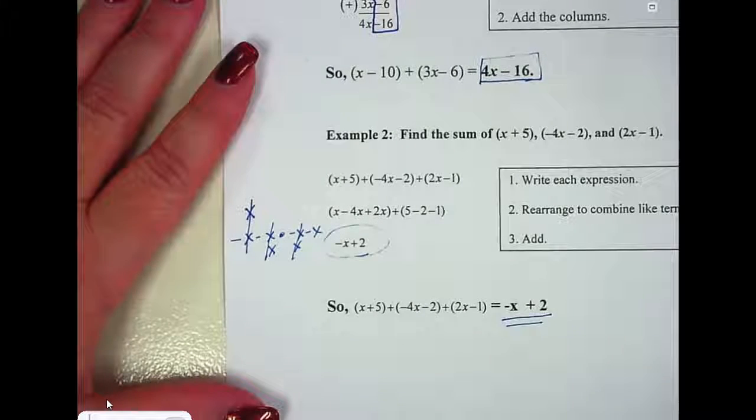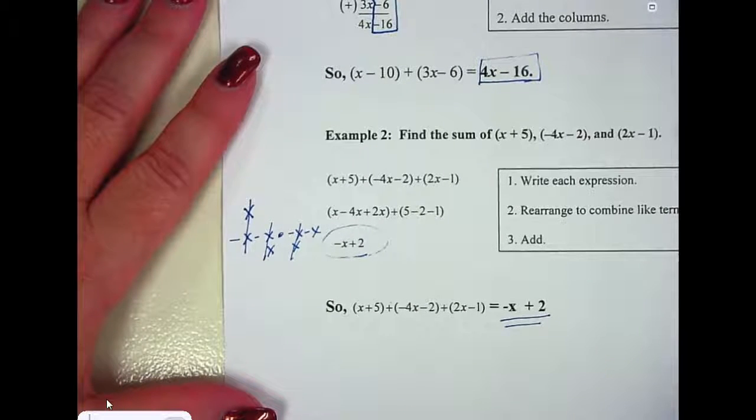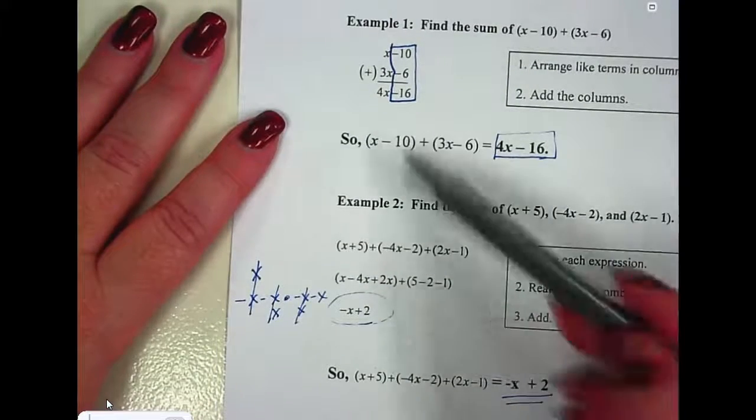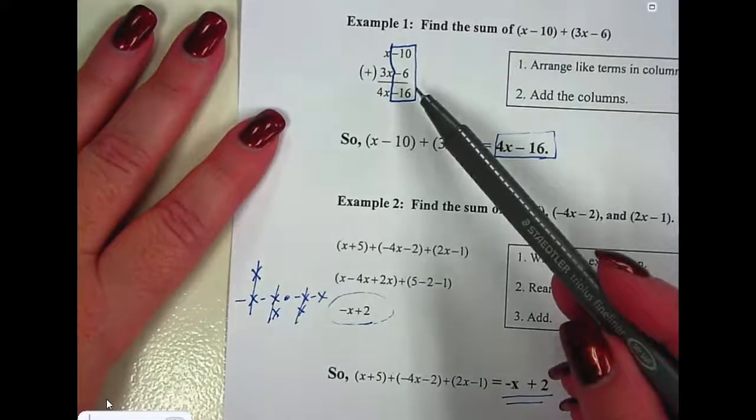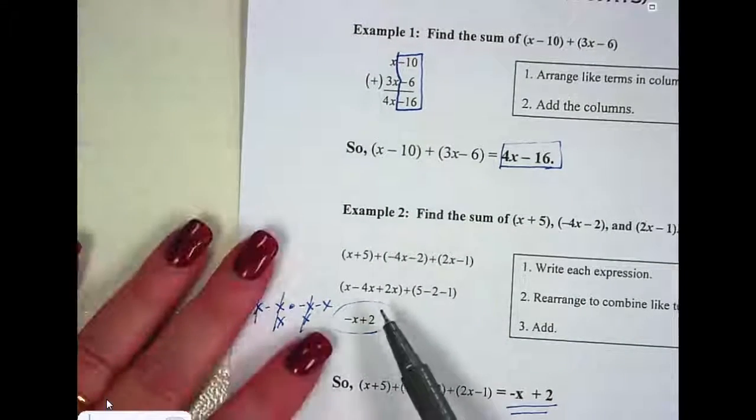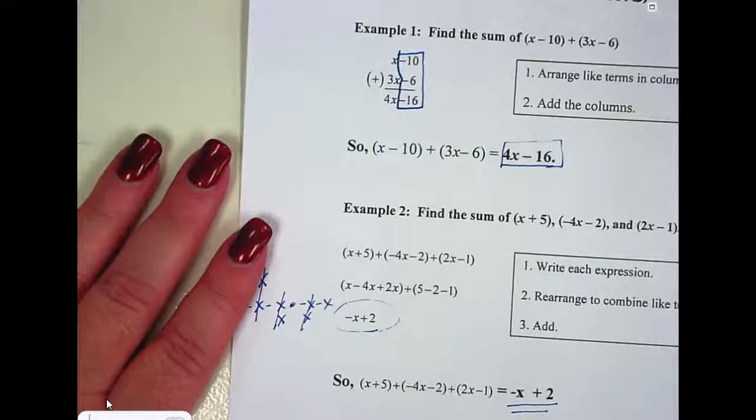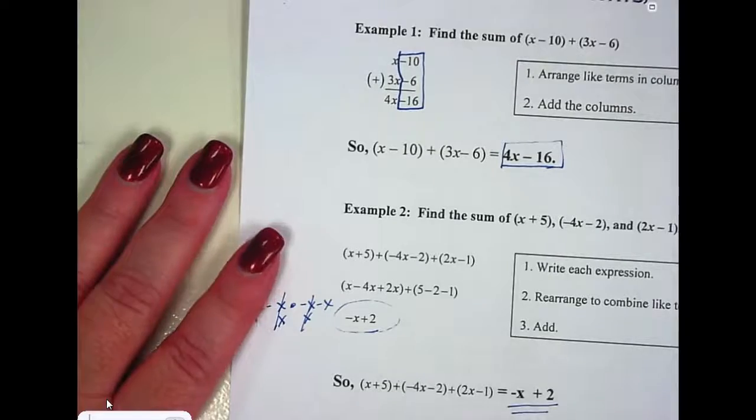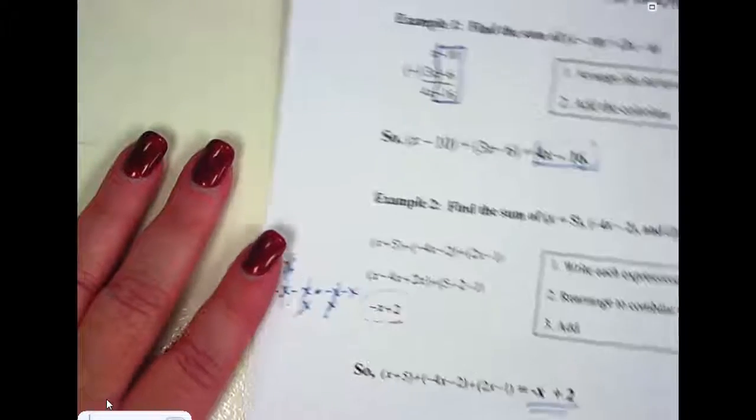And then I have 5 minus 2 is 3, 3 minus 1 is 2. So this simplifies to negative x plus 2. You can try it either way, where you line them up or where you just rearrange and put the like terms together. Whichever way you think works best for you is what you can do.